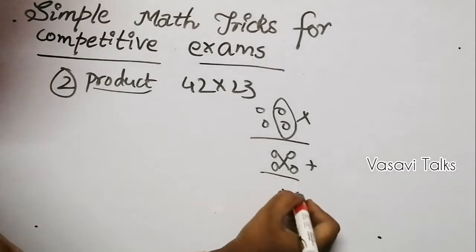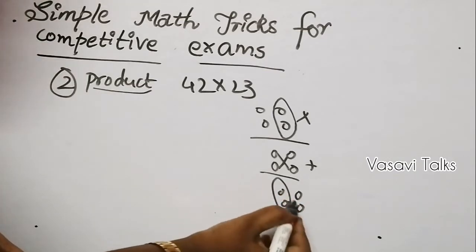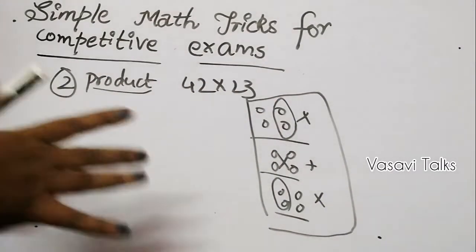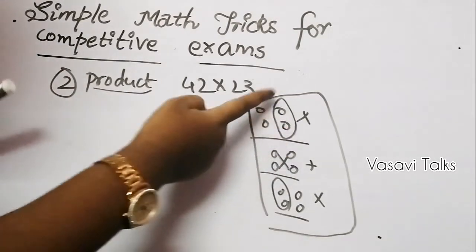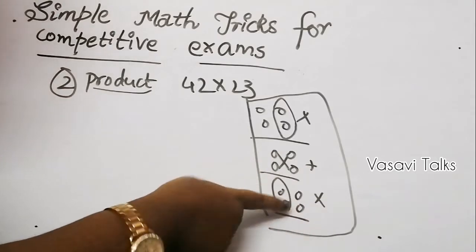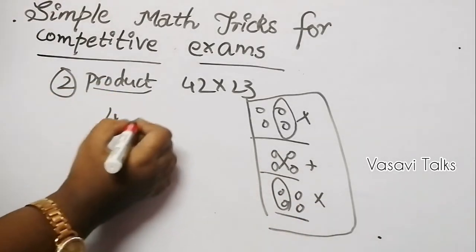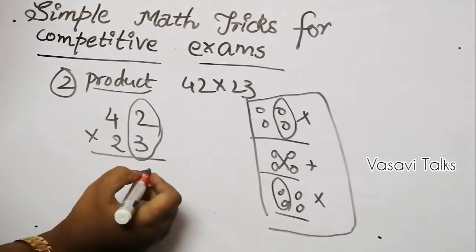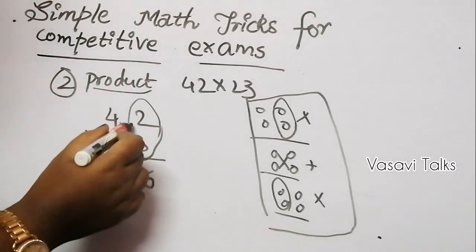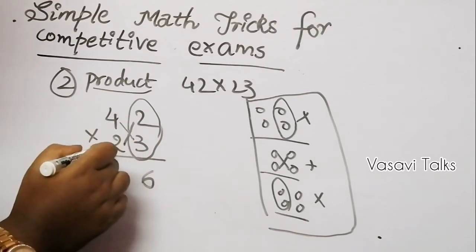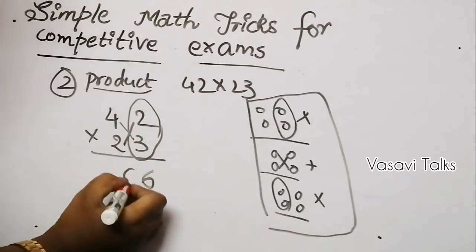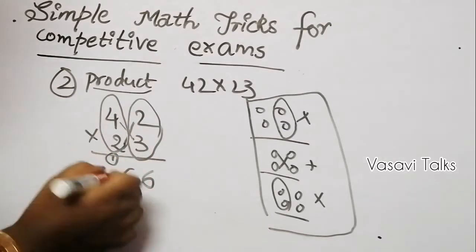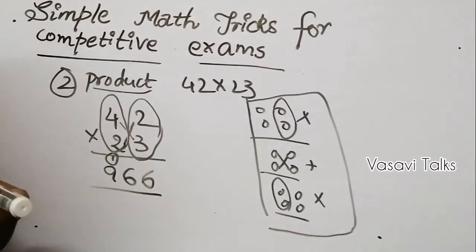Let's use 42 into 23. First, multiply the units digits: 2 times 3 is 6. Next, cross multiply and add: 4 times 3 is 12, and 2 times 2 is 4; 12 plus 4 is 16. Write 6, carry 1. Finally, multiply the tens digits: 4 times 2 is 8, plus the carry 1 is 9. So the answer is 966.